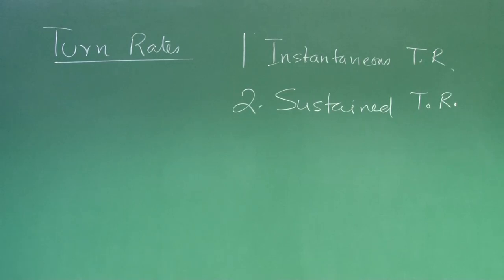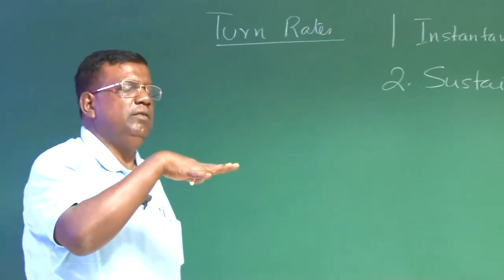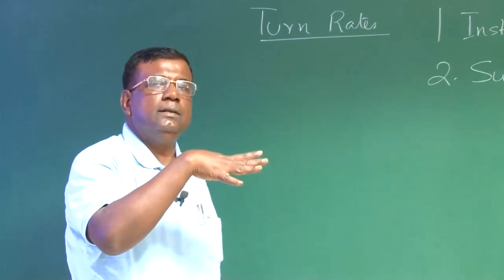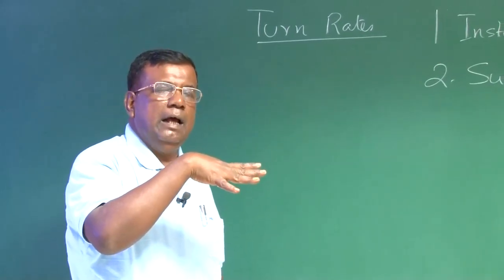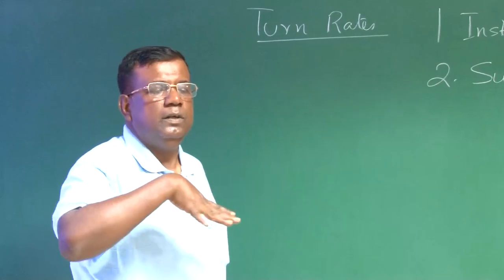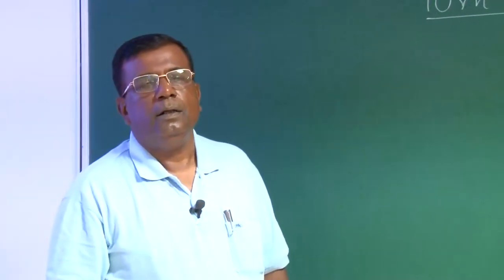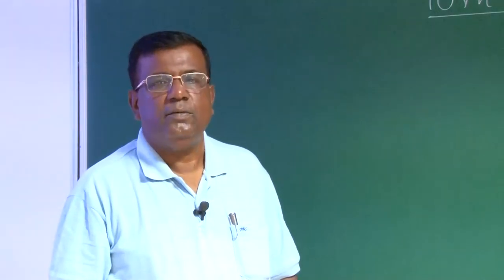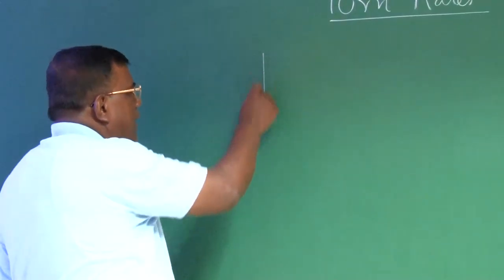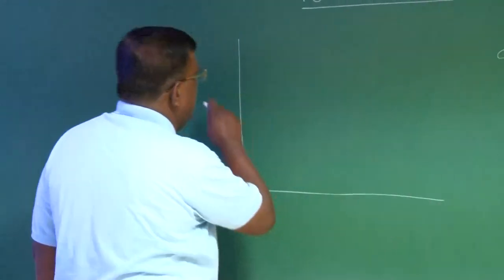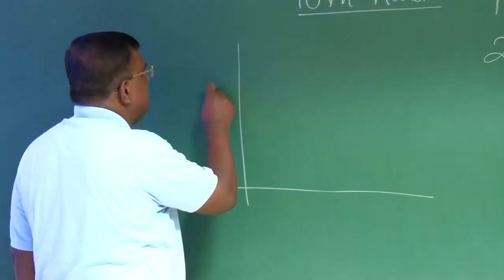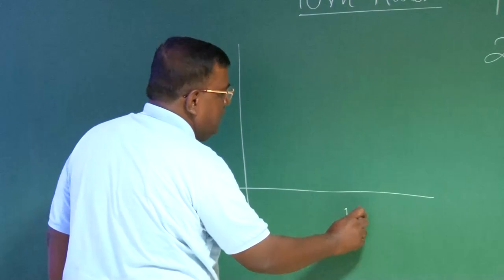Whenever you are turning, how do you turn? I am moving like this. If I want to turn, I have to bank and I have to use that lift force to generate that centripetal acceleration to get a particular rate of turn. Whenever you are talking about turn rate, please revise that v-n diagram, load factor and speed diagram.